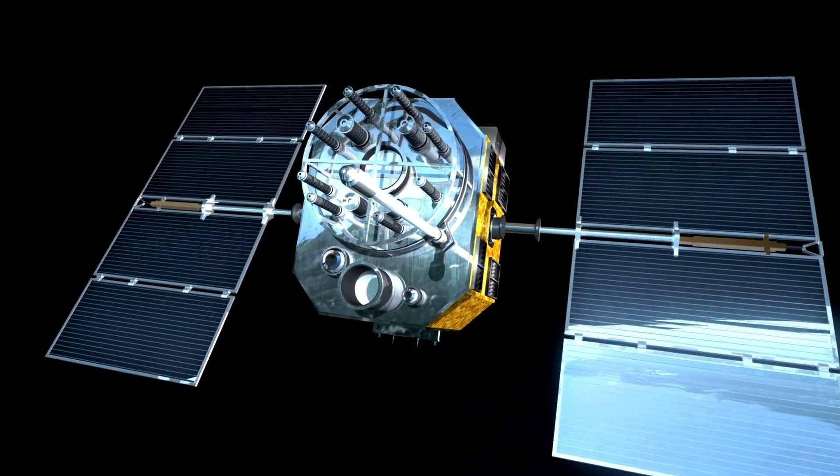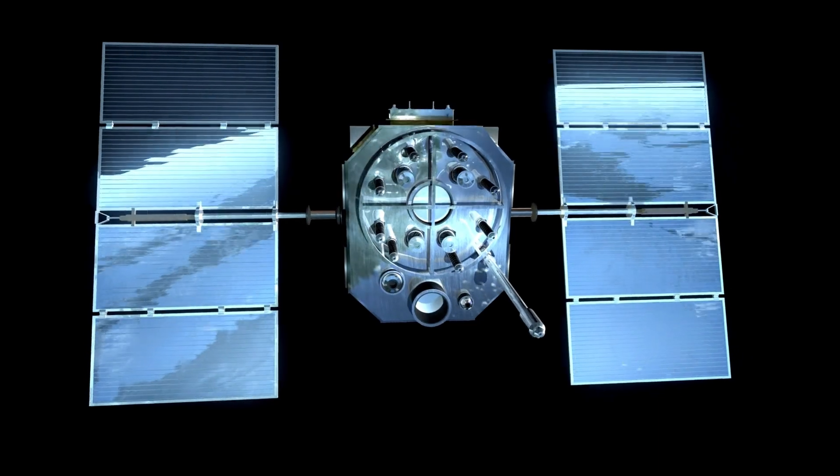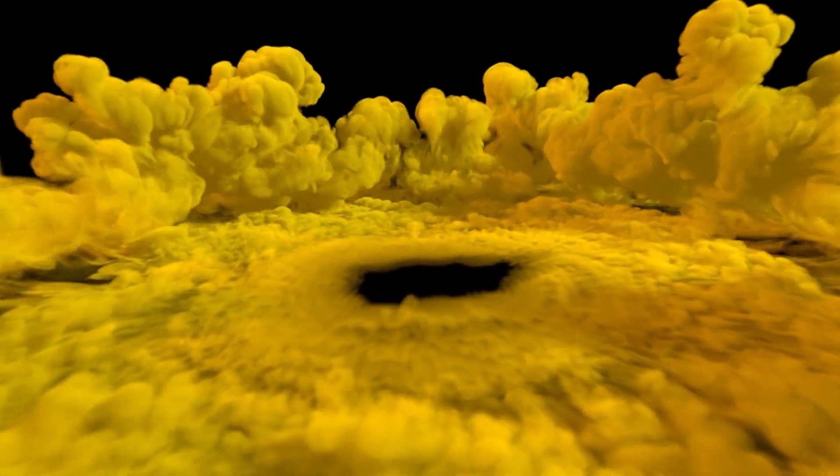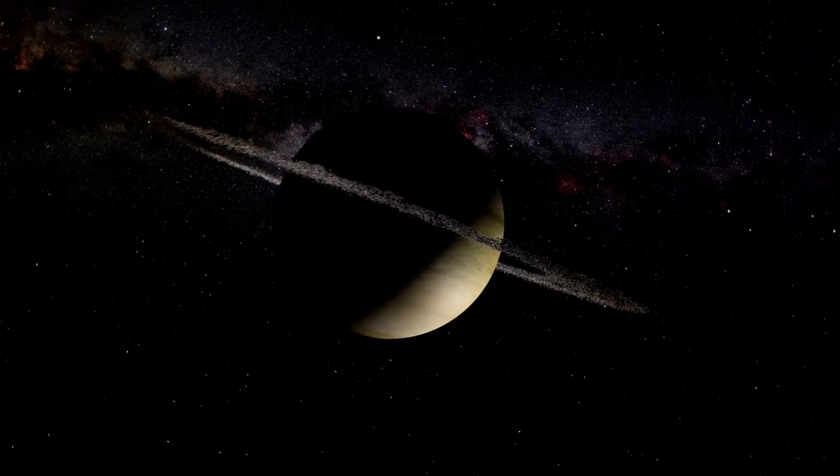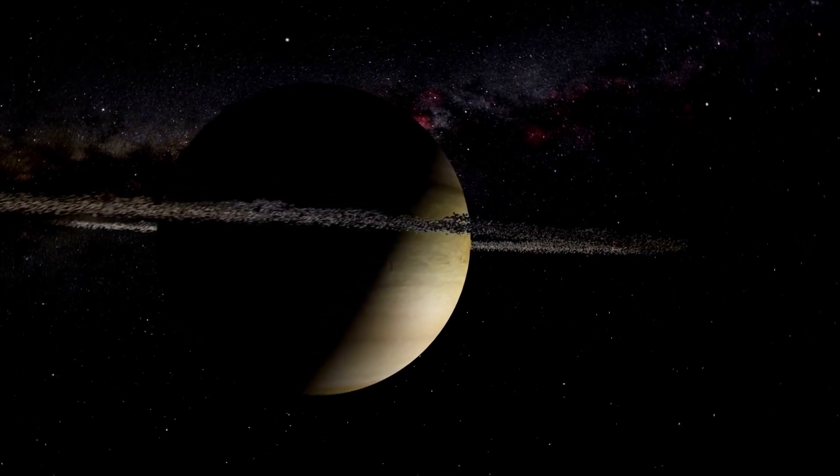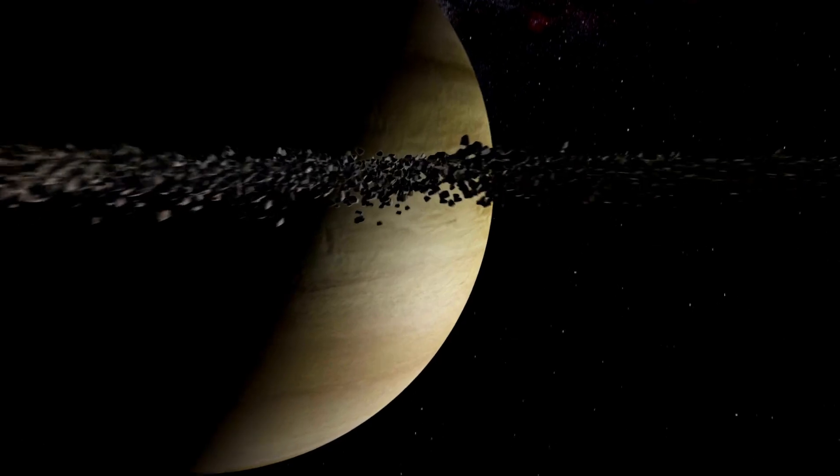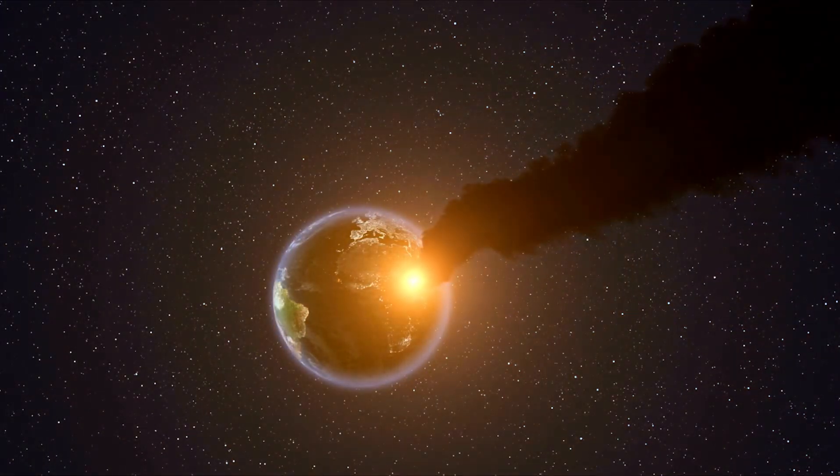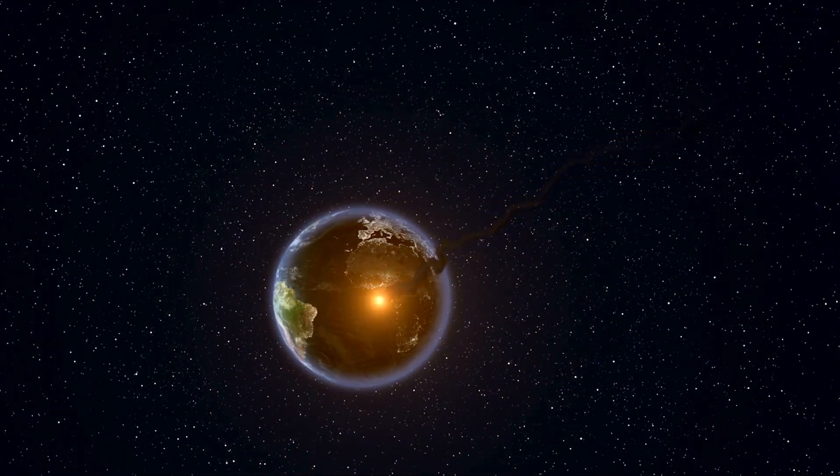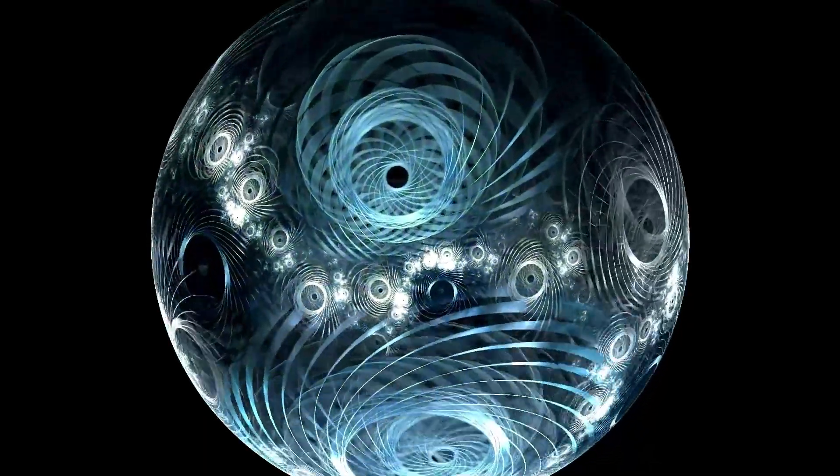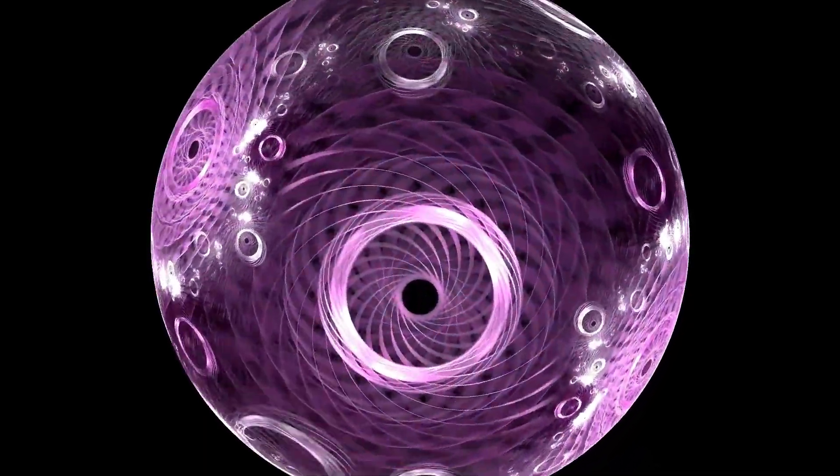This collision also lends weight to earlier hypotheses regarding the role Neptune played in the formation of the solar system. Many astronomers believe Neptune migrated outward early in its history, disturbing the orbits of other planets and shaping the distribution of objects in the Kuiper belt. A present-day impact from a scattered disk object, an icy body originating from far beyond Neptune, would support this idea and provide direct evidence of Neptune's gravitational influence extending deep into the outer solar system. This makes the impact not only a spectacular cosmic event but also a time capsule—a frozen ambassador from the early solar system holding secrets from an era when planets were still in the process of formation and migration.